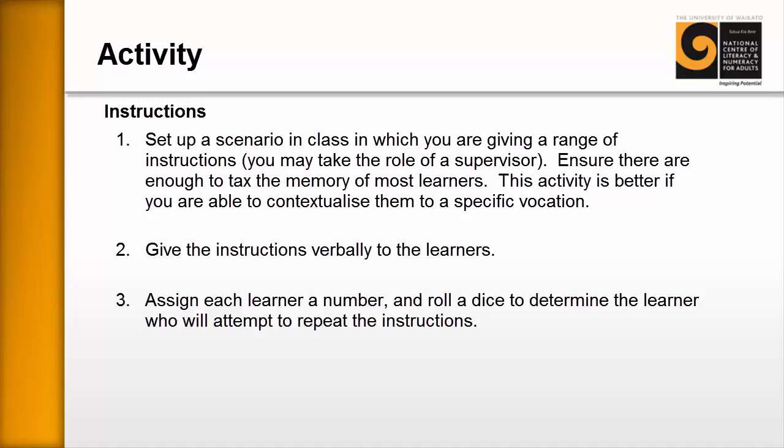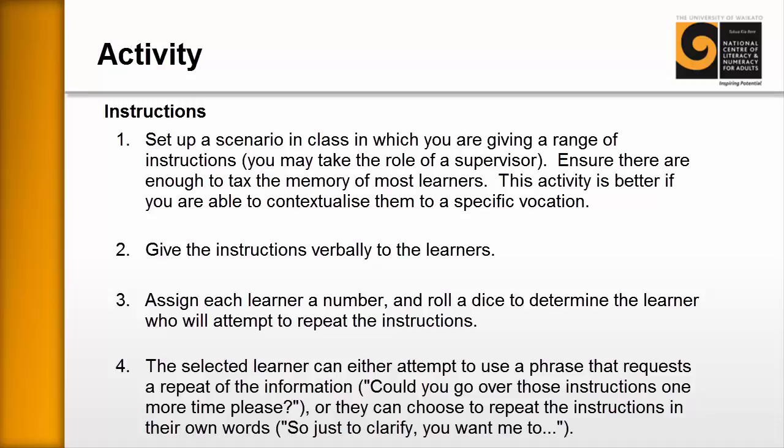Step three: assign each learner a number and roll a dice to determine who will attempt to repeat the instructions. You set up a meeting situation, act as supervisor, give a series of instructions, then roll the dice to select a learner at random. That learner uses a phrase requesting a repeat — for example, 'Could you go over those instructions one more time please?' — or they repeat the instructions in their own words: 'So just to clarify, you want me to...'